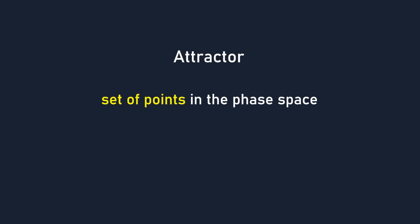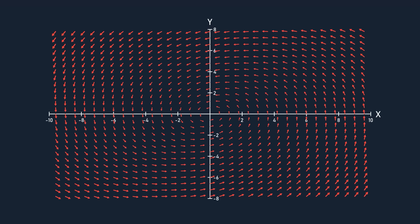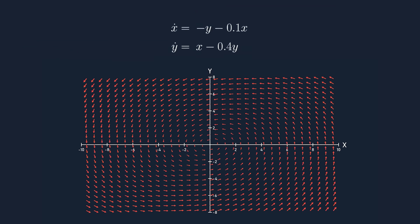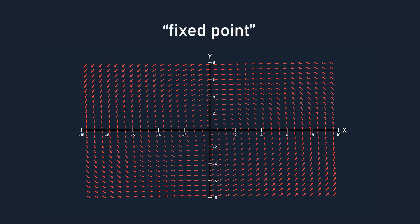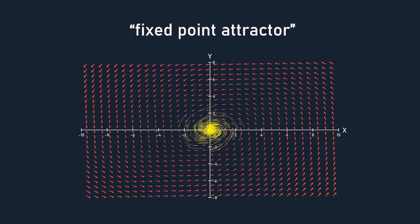An attractor is a set of points in the phase space which attracts all the trajectories in a certain area surrounding it, known as the basin of attraction. Here, the attractor is just the origin, and the basin of attraction is every point in the space. Notice that at the origin where x equals zero and y equals zero, x dot and y dot equals zero too. That makes it a fixed point because any point there will stay there forever due to it having a rate of change of zero. Since it's also an attractor, it's a fixed point attractor.